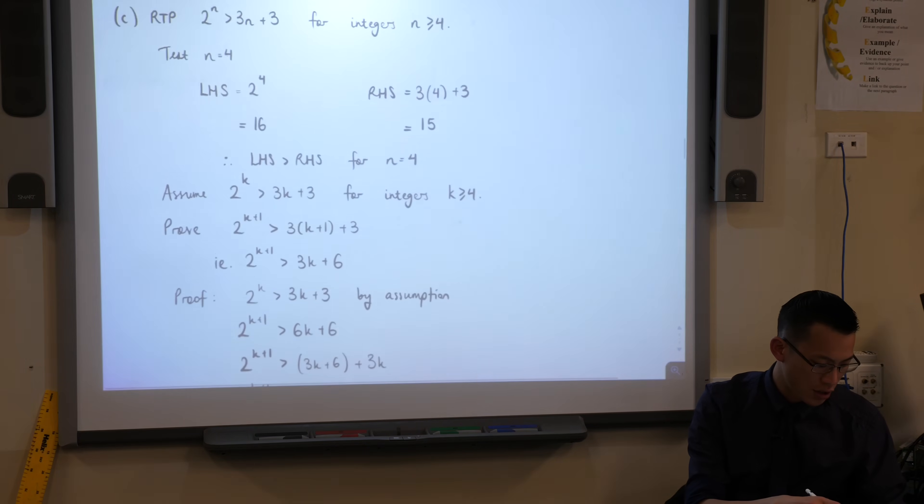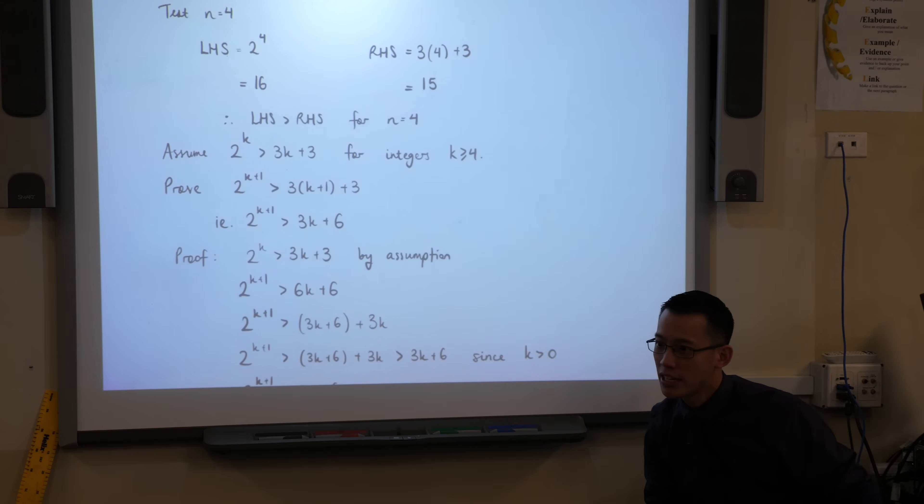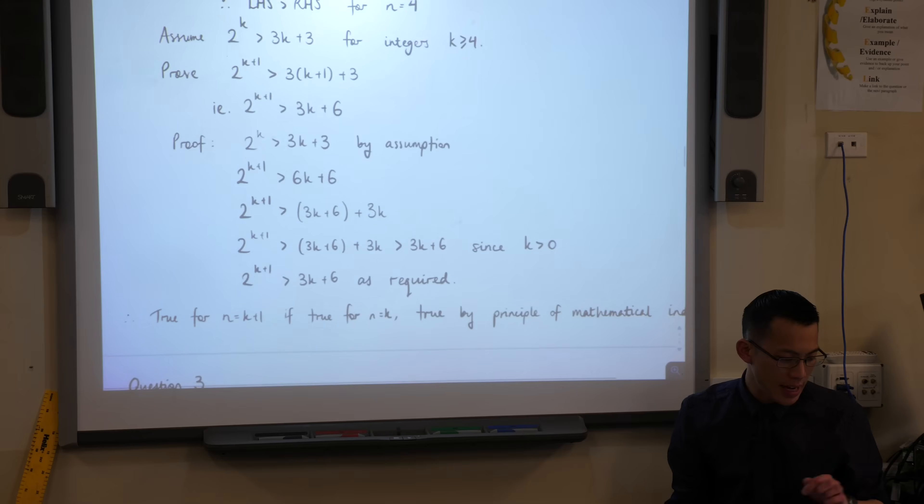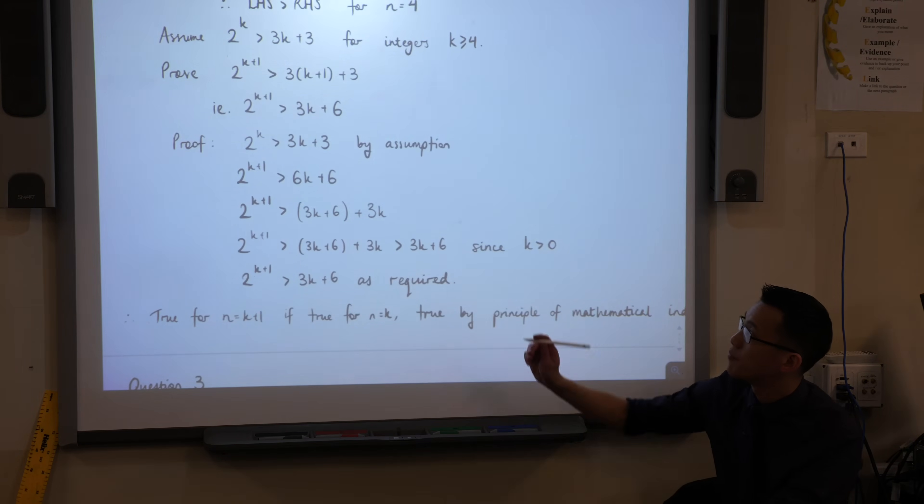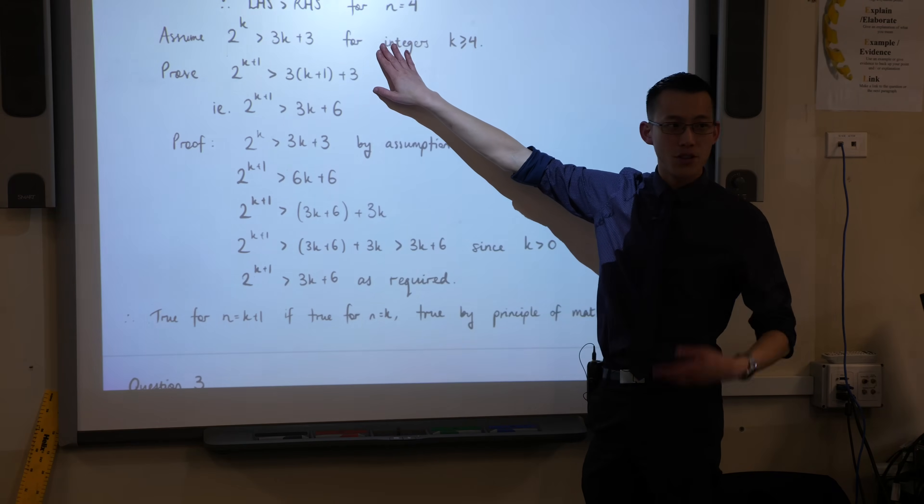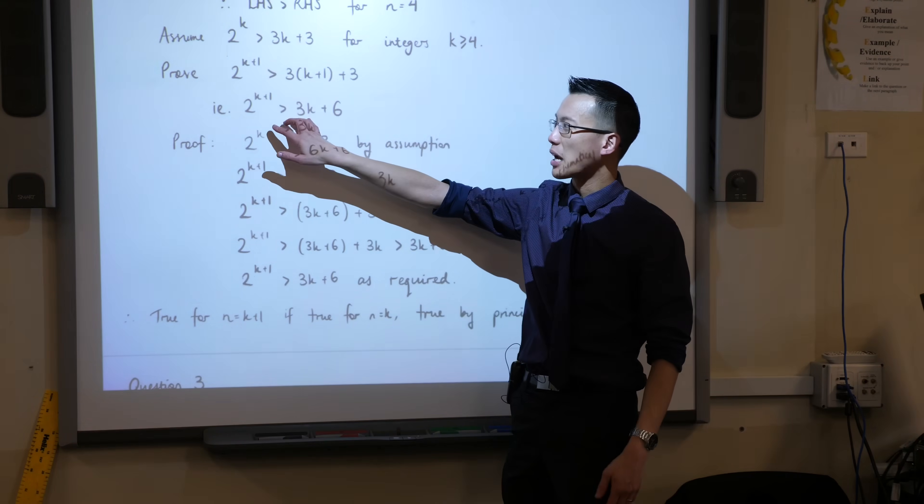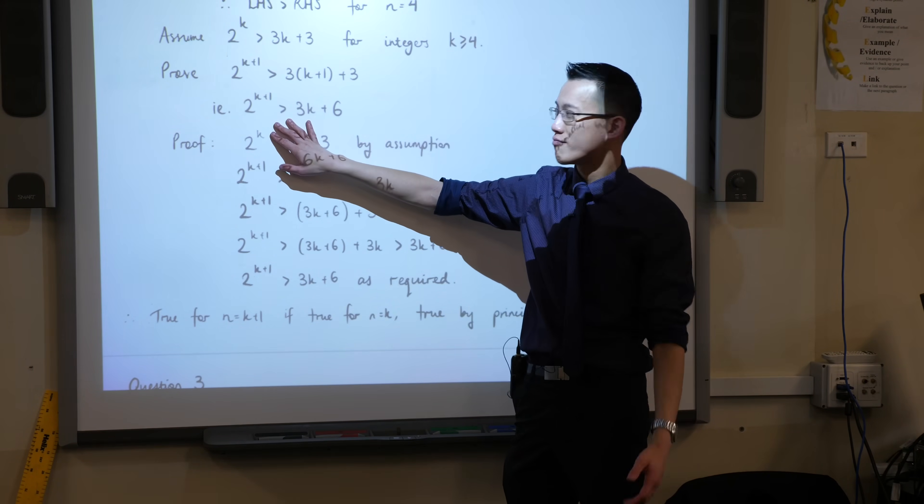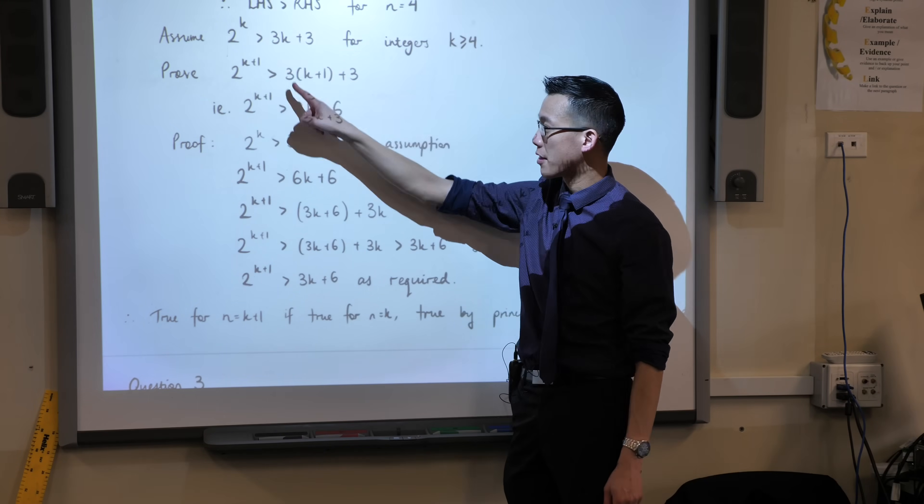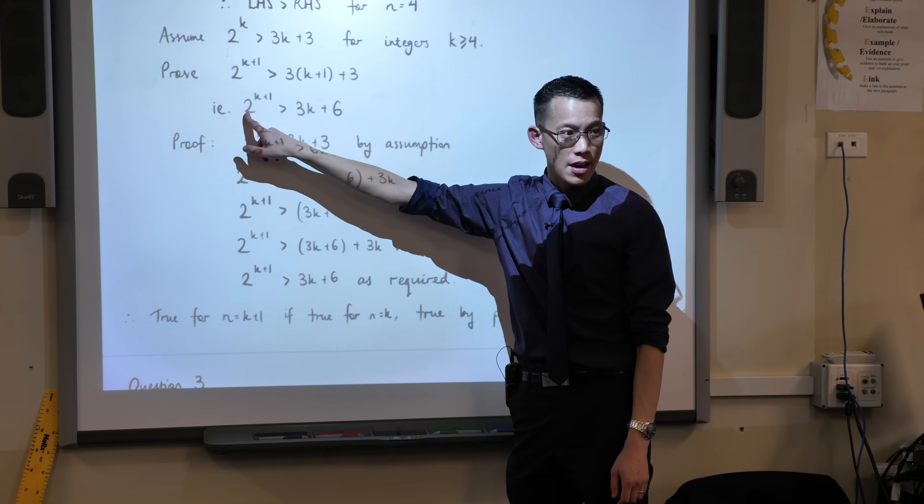Last proof by mathematical induction on this page. The inequalities do tend to be the ones that give us the most grief, because you have to be a little more creative with these. But you can see there's a few ways to do this. Here's the way I've chosen to do it. Here's my assumption. I've just popped k in. Here's what I'm trying to prove, my k plus 1 case. So you can see there's k plus 1 in the power. There's k plus 1 being multiplied by 3, which looks like this.